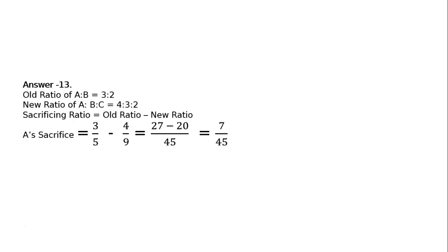A's sacrifice is equal to 3 upon 5 minus 4 upon 9. 3 upon 5 is old share. 4 upon 9 is the new share. That is equal to LCM is 45. 9 threes are 27 minus 5 fours are 20. That is equal to 7 upon 45.